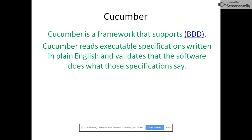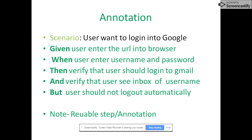Why BDD? In acceptance testing, the business people can understand how the application behaves with different inputs. We write a feature file in plain English so that business people can understand how the application is behaving when a different type of input is given into the test case. In Cucumber there are five annotations.